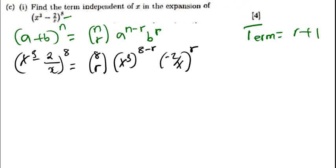So how can I find r? We are only interested, remember, we are saying that the term independent of x is given by x to the power 0. So x to the power 0 is the term that doesn't have x.